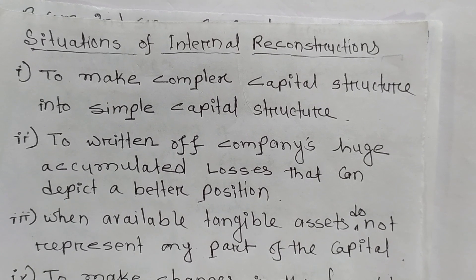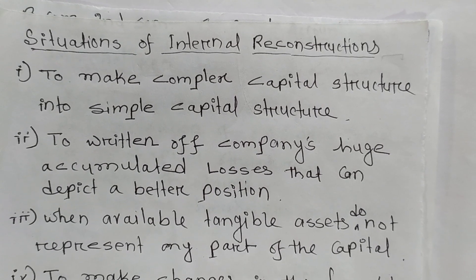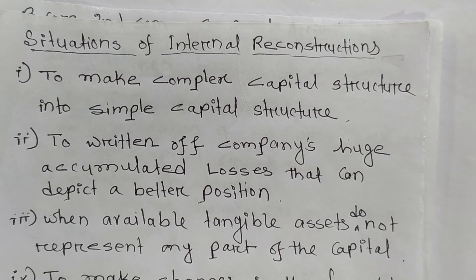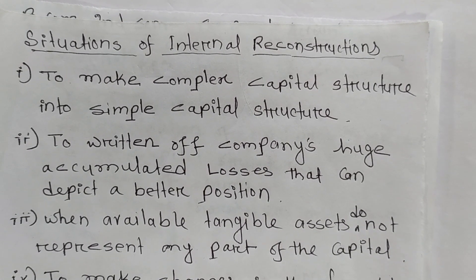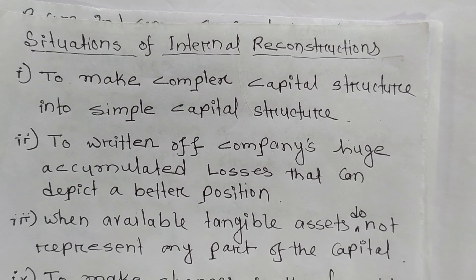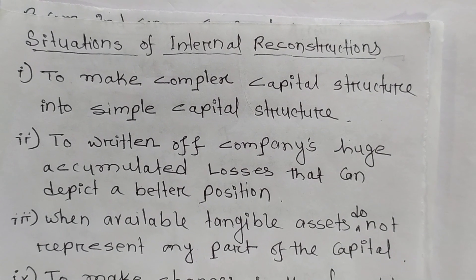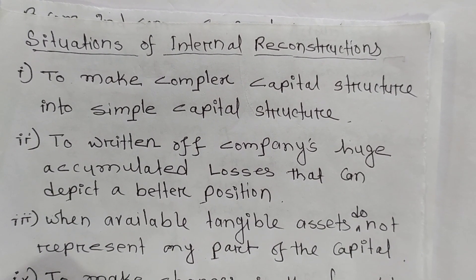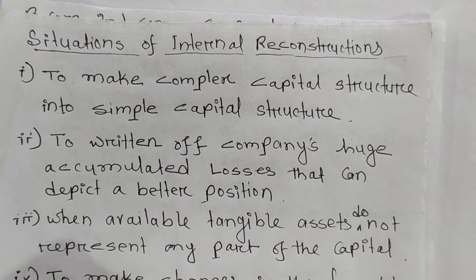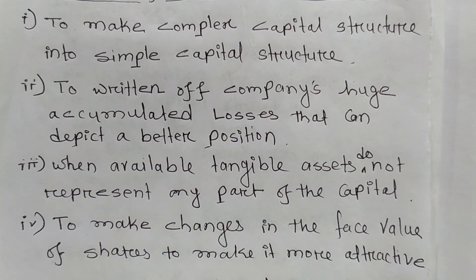A complex capital structure includes convertible bonds, convertible preferred shares, stock options, rights shares, share warrants — all these instruments make a capital structure complex. A simple capital structure means converting away from these complex instruments. Is it clear? So the complex capital structure can be converted to a simple capital structure to depict a better position of the company.